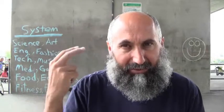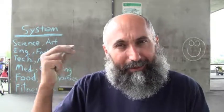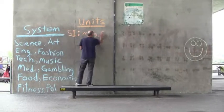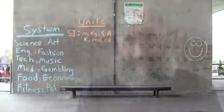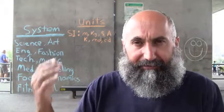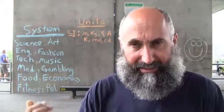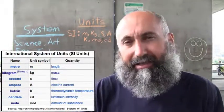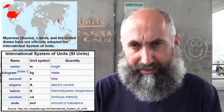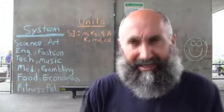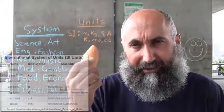Let's list some of the units we may encounter so we're familiar with them. There are seven base units that cross over a lot of these different disciplines and systems. For those, we've come up with the International System of Units, which is recognized almost everywhere except three countries: the United States, Liberia, and Burma.